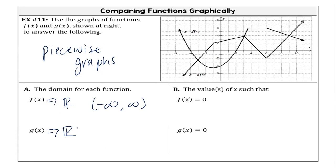All right, we can do domain. The next thing we're going to analyze are the values. When it says f of x equals zero, what does that mean you're looking for? When your y is zero, so you're looking for your x-intercepts. Anytime something says f of x equals zero, that means you're looking for x-intercepts. So for the function f of x, where are my x-intercepts?